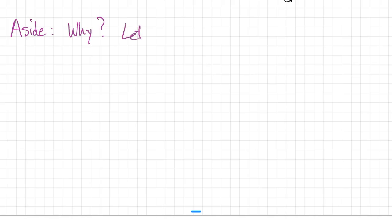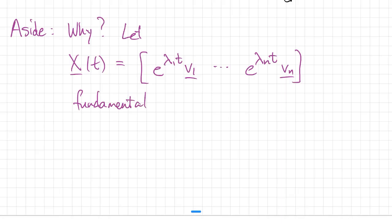Well, if we take these exponentials times vectors, those are independent solutions of our homogeneous problem. So X is a fundamental matrix for X prime equals A times X.